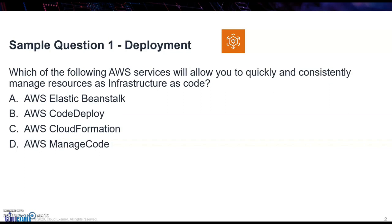When you're taking the exam, one of the important things to look at is keywords. Right here we see the words 'quickly and consistently,' and then the other one is 'infrastructure as code.' So the question is which of these services can do that. Now if you're not familiar with AWS or some of these services, you may not know, but if you look at the first one — Elastic Beanstalk — you know it is a service.